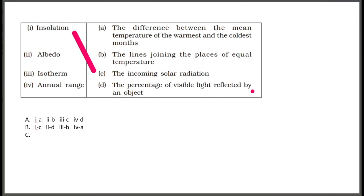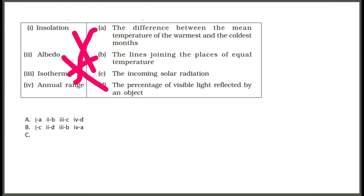An isotherm joins places of equal temperature. The annual range is the difference between the mean temperature of the warmest and coldest months. The correct matching is: 1-C, 2-D, 3-B, 4-A.